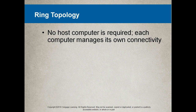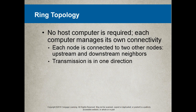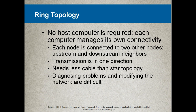The ring topology requires no host computer — each computer manages its own connectivity. Each node is connected to two other nodes: upstream and downstream neighbors. Imagine you're a computer: your left arm is connected to one friend and your right arm to another. Transmission is in one direction — always from left to right, or anti-clockwise. It needs less cable than the star topology, but diagnosing problems and modifying the network is more difficult.